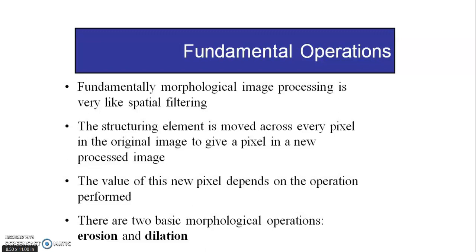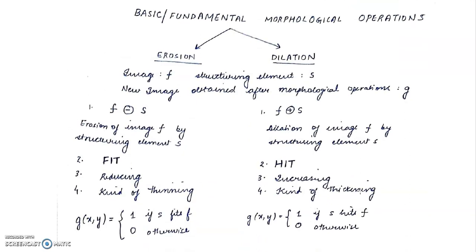The two basic morphological operations are erosion and dilation. When you're doing a fit you call it erosion, and whenever you are doing a hit you call it dilation. This is just a term to avoid confusion, since we also use opening and closing. So erosion is nothing but a fit operation and dilation is nothing but a hit operation.